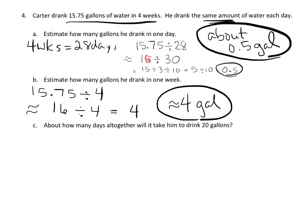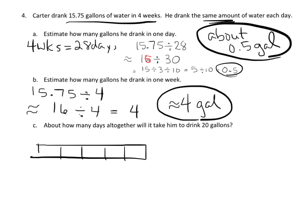How many days altogether will it take him to drink 20 gallons? One approach: if it's about 4 gallons per week, we need five weeks — one, two, three, four, five — because 4 gallons times 5 weeks equals 20 gallons. That's about 5 weeks, which is 35 days.